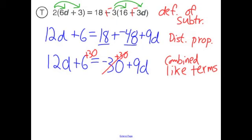So I put a slash mark through that to show that they add up to 0. And then I simplify what I've done, and 6 plus 30 is 36, and 0 plus 9d is 9d.